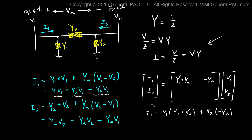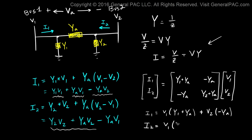For I2, the V1 coefficient is negative YA and the V2 coefficient is Y2 plus YA. So I2 equals (−YA)·V1 plus (Y2 + YA)·V2, which matches our equation. This confirms the matrix correctly represents both currents. The matrix in brackets is what we call the Y bus, and this tutorial is about how to construct it for load flow calculations.